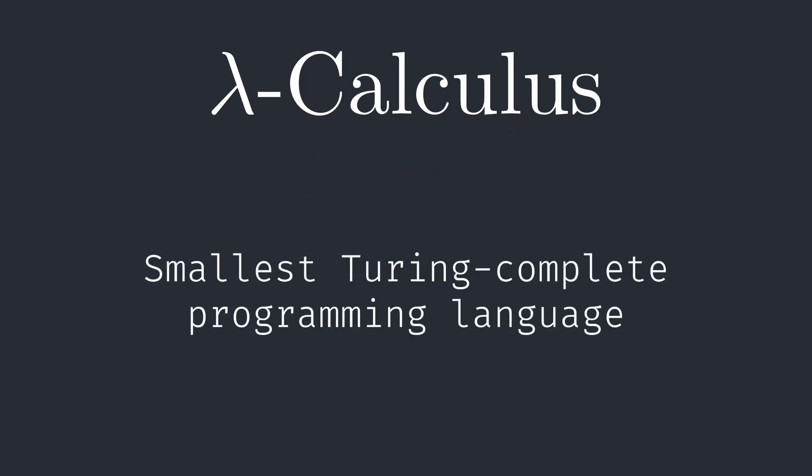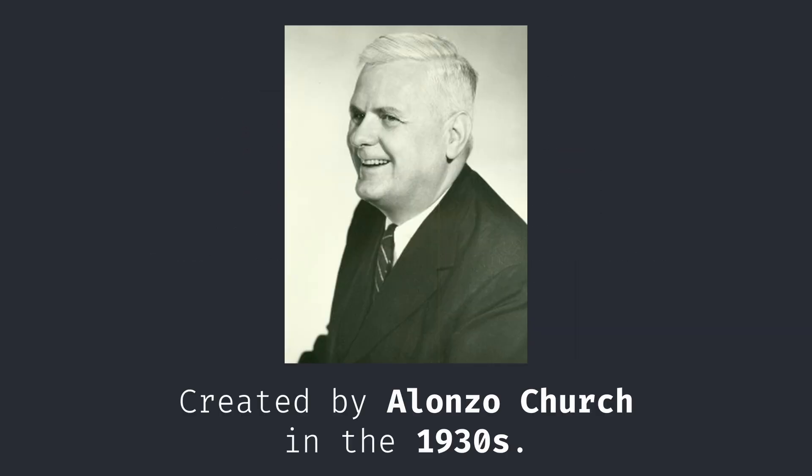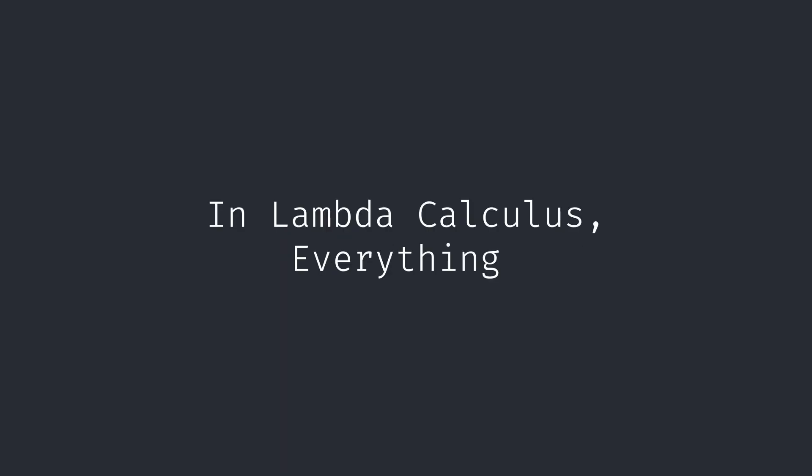Lambda Calculus is the smallest Turing-complete programming language created by Alonzo Church in the 1930s. In Lambda Calculus, everything is a function, which are formally known as abstractions.